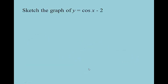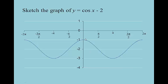Let's sketch the graph of y = cosine x − 2. This takes the cosine curve, which usually goes between negative 1 and 1, and drops it 2 units. It doesn't change the period; it doesn't change the domain — we can still use all values of x, and the period is still 2π. It does change the range: instead of negative 1 to 1, it's going to be negative 3 to negative 1. All we're doing is picking it up and moving it up or down; the graph looks exactly the same.